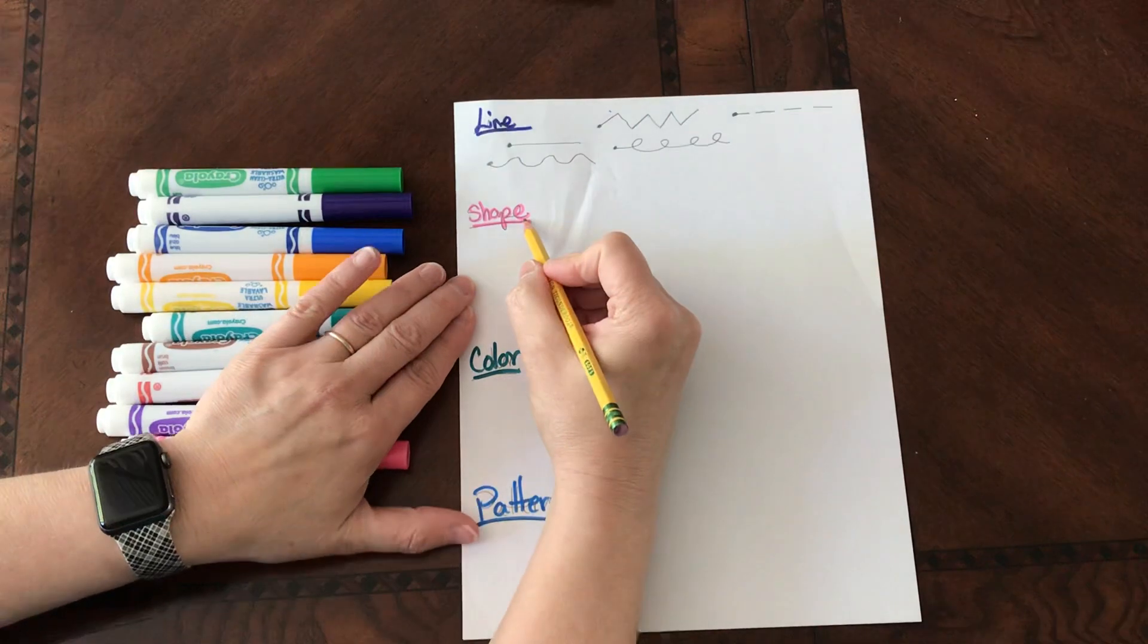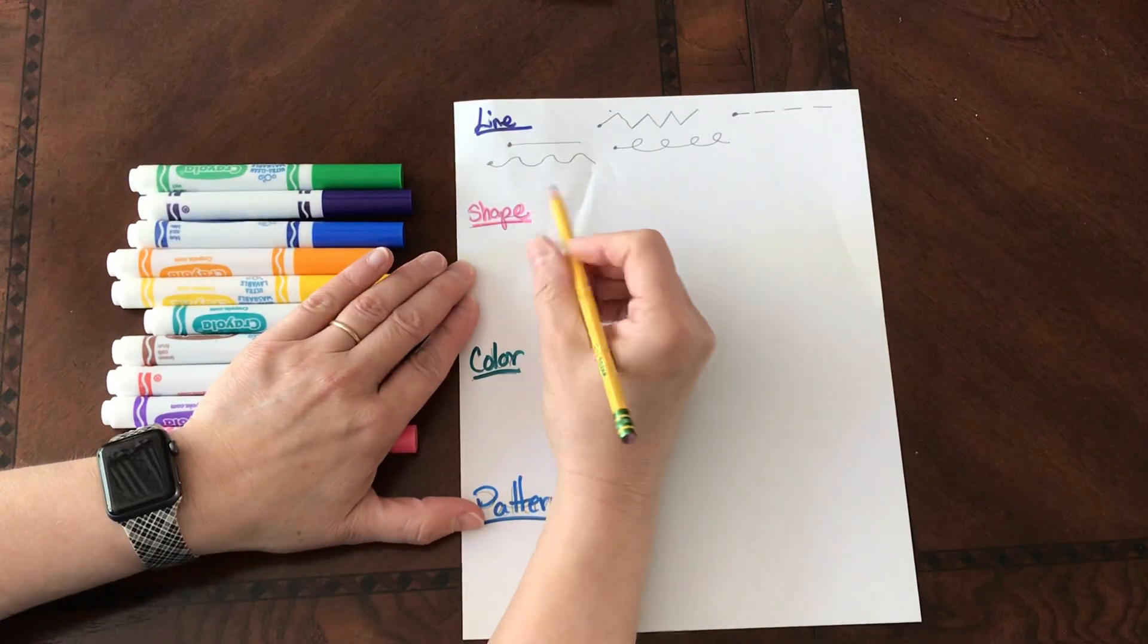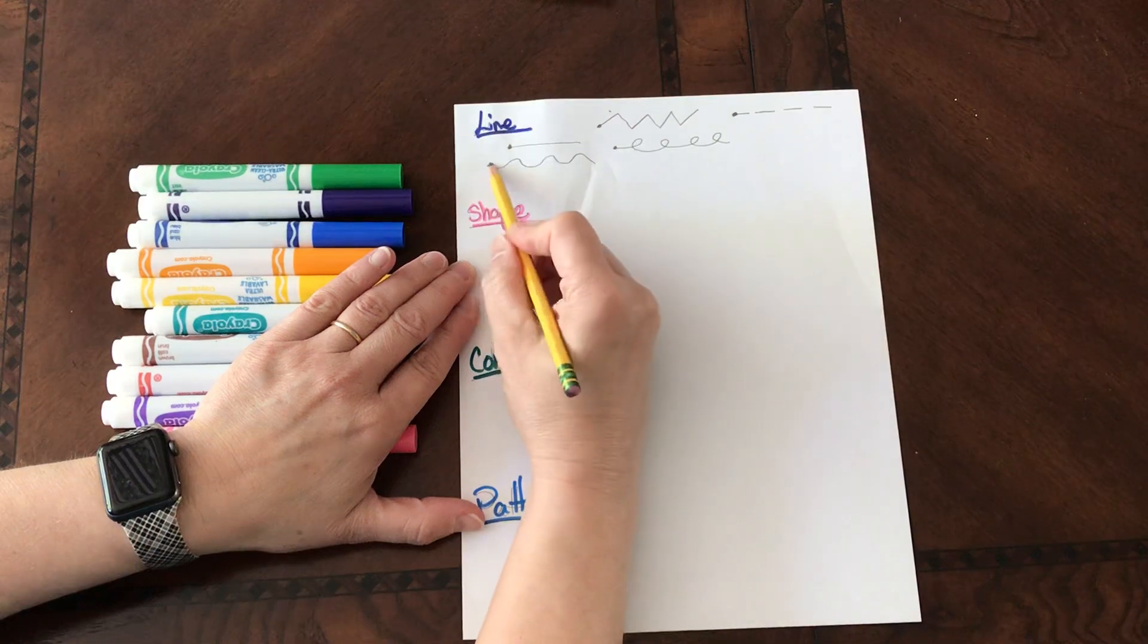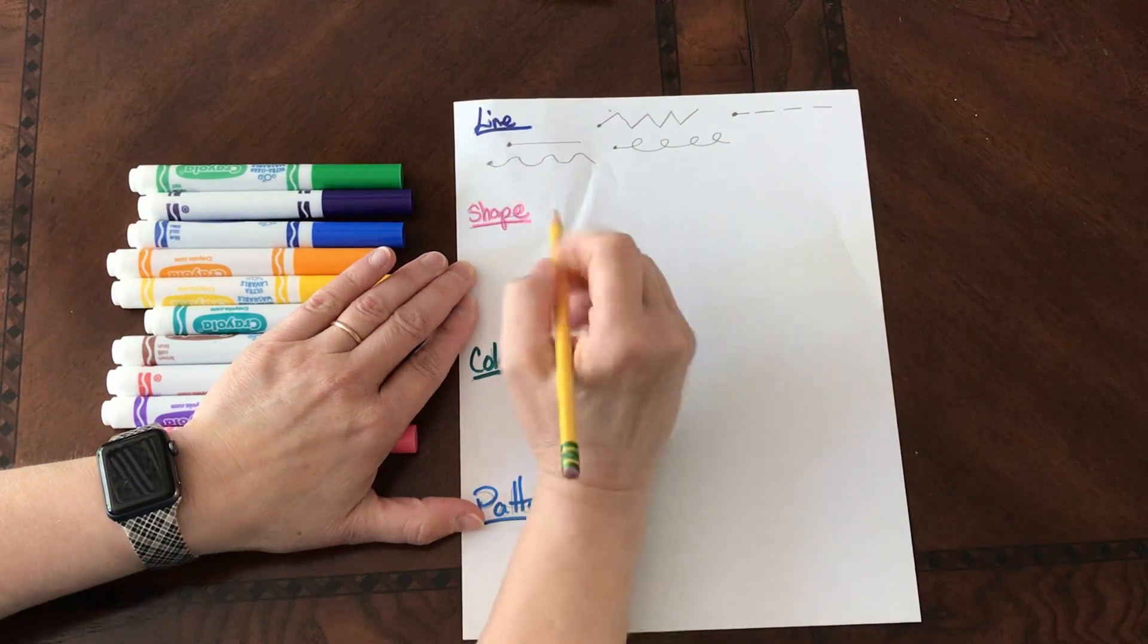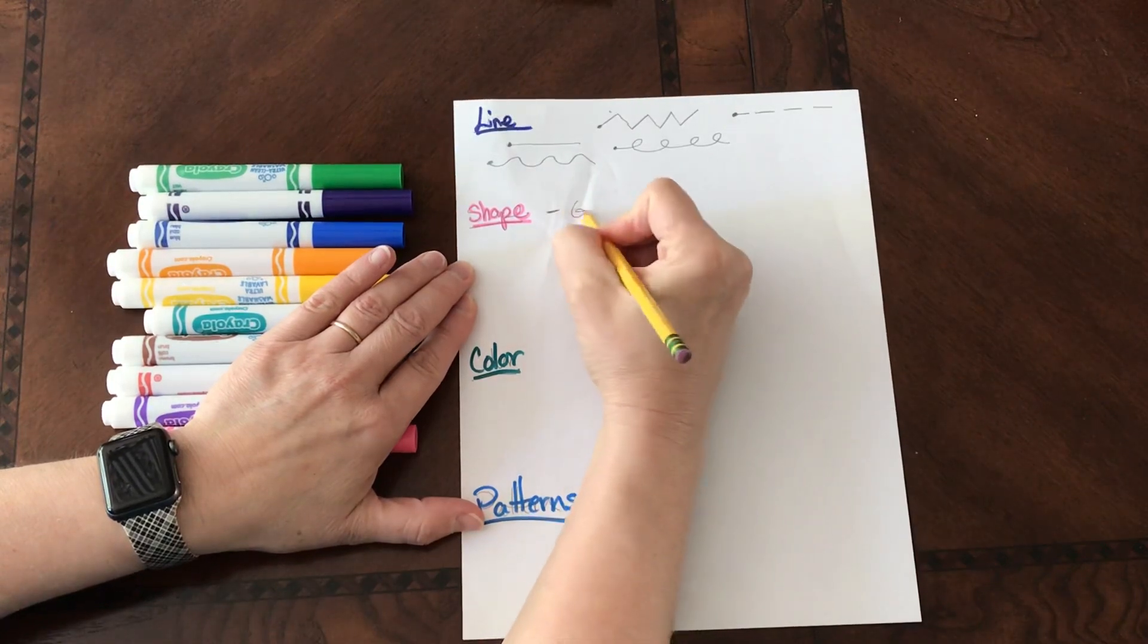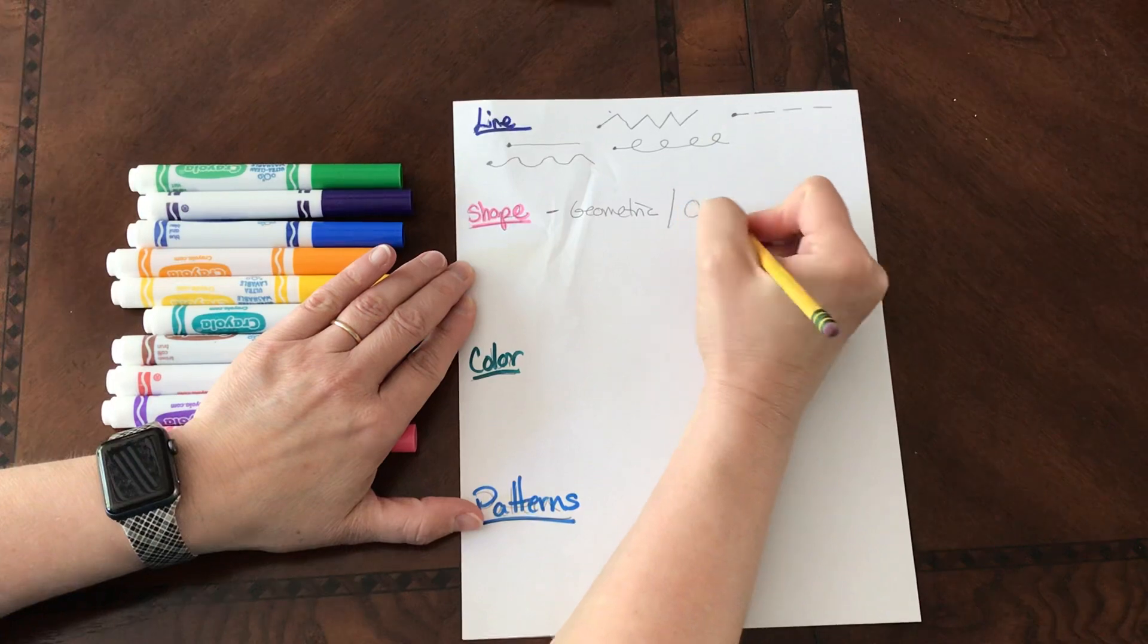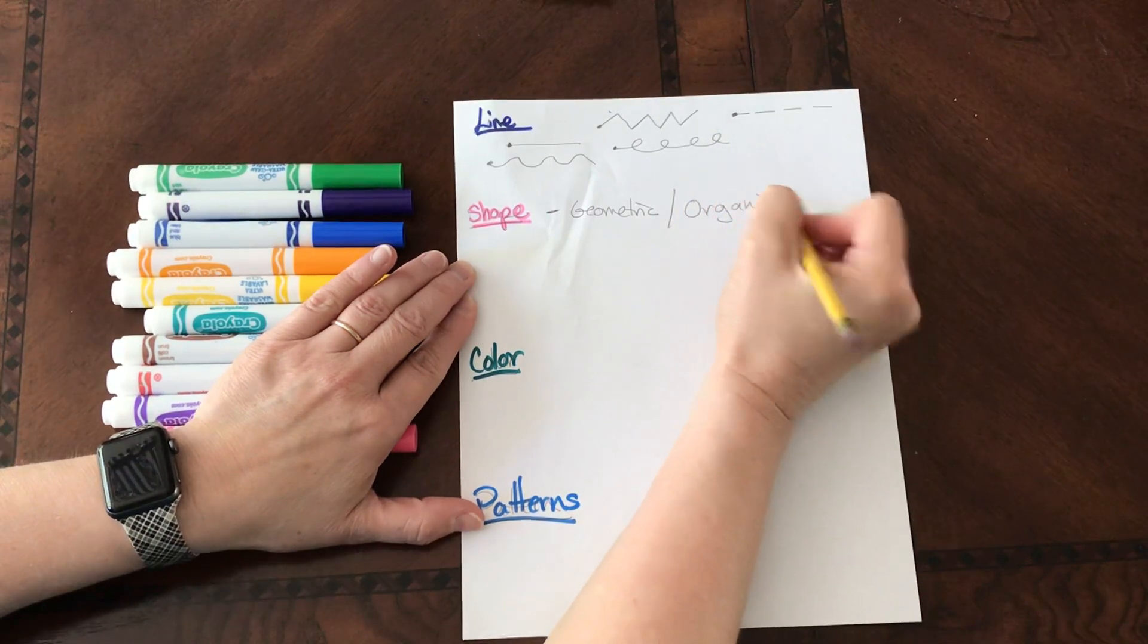A shape. Now we all know basic shapes. A shape is created by making a line reconnect with one another. So we have two different types of shapes: we have geometric shapes and we have what's called organic shapes.